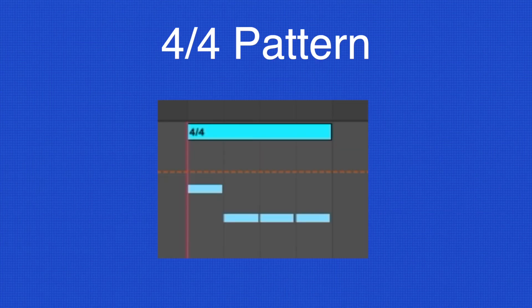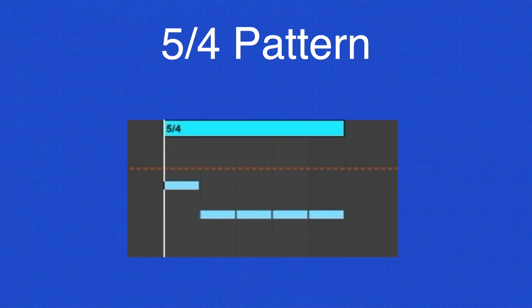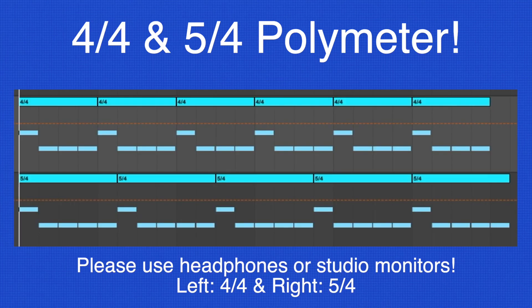So here's a 4-4 pattern where the first note is a hi-hat and the other notes are kicks. And here's a similar pattern, but this one is in 5-4. So there's an extra quarter note kick. Okay, let's listen to them together.